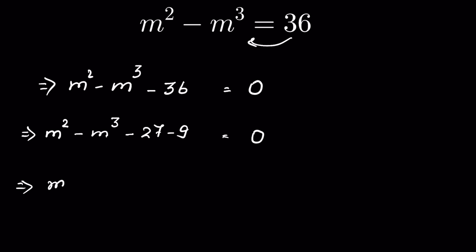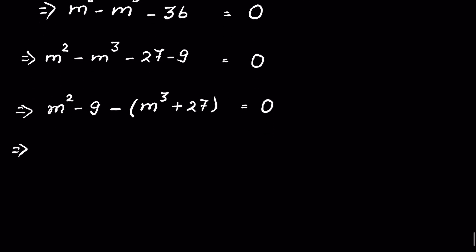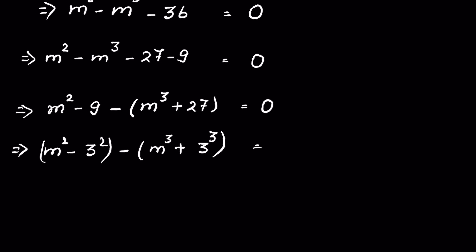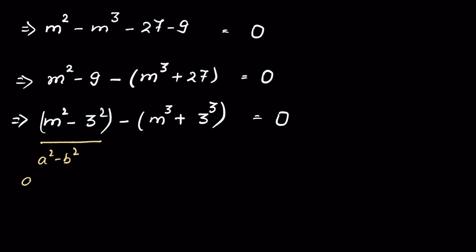Rearranging, we write it as m squared minus 9, minus the quantity m cubed plus 27, equals 0. Now m squared minus 9 is m squared minus 3 squared, and m cubed plus 27 is m cubed plus 3 cubed.